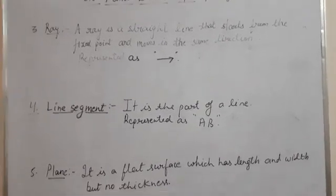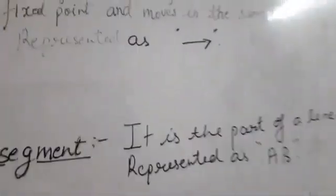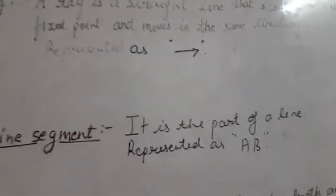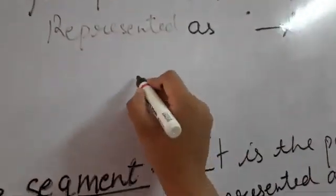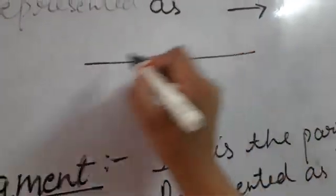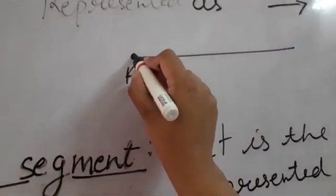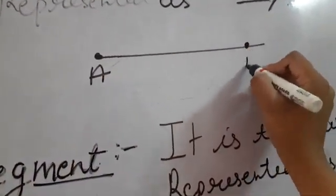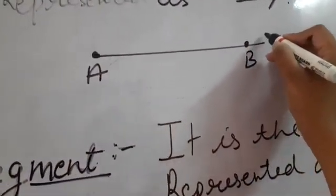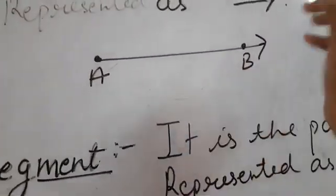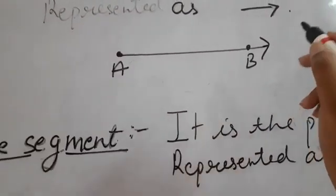A ray is represented with an arrow on one side. If I ask you to draw ray AB, you will draw a line where this starting point is A. Point B is where it continues to move on the other side, and you mark an arrow at that end.